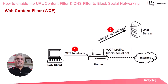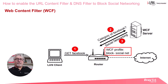If that doesn't pan out, the router then sends a query to the WCF server to check the category of the URL. If the website category matches a WCF setting profile in the router to either block or permit, it sends that information back to the router to apply it to the relevant firewall filters. In this case we have a rule to block Facebook, which fell under the social networking category, so the router blocked the LAN client from it.